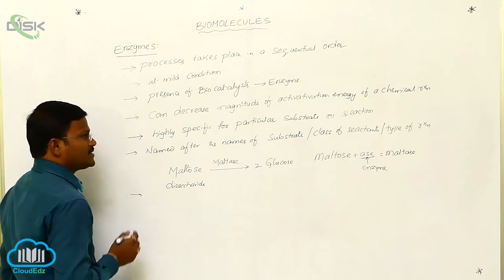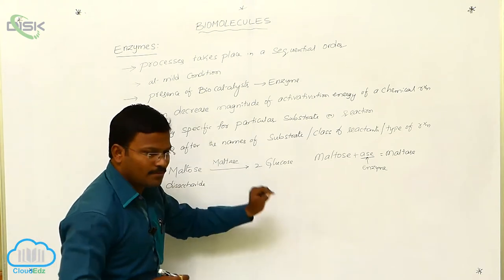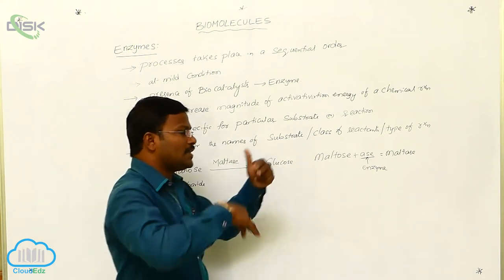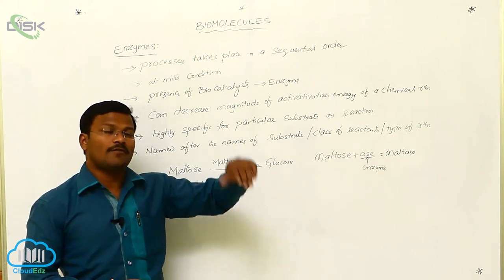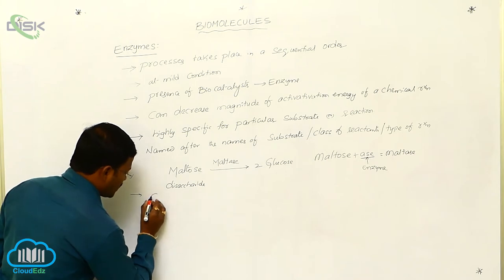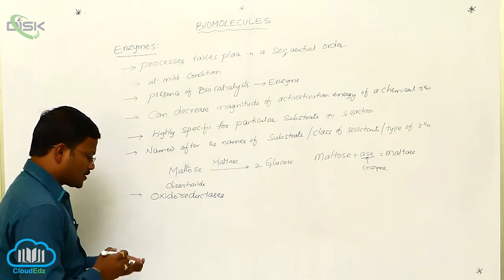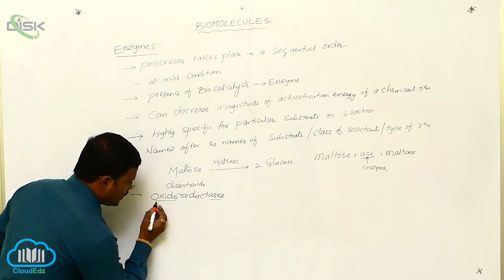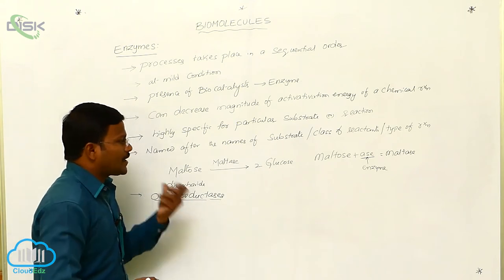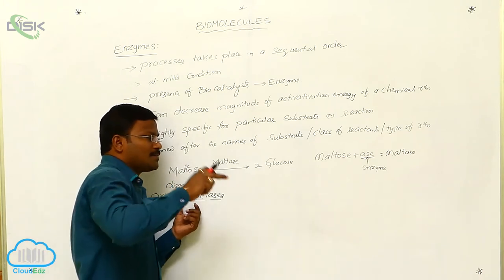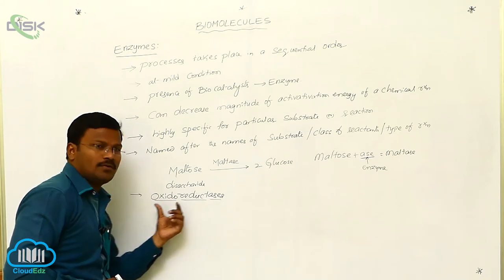Similarly, some enzymes are named after the type of reaction. Some enzymes are involved in the oxidation reaction of one substrate molecule and simultaneous reduction of another substrate molecule within the same reaction. Such types of enzymes are called Oxidoreductases. Here '-ase' indicates enzyme, 'oxido' means oxidation reaction, and 'reductase' means reduction reaction. So Oxidoreductases carry out oxidation of one substrate and simultaneous reduction of another substrate within the same reaction.